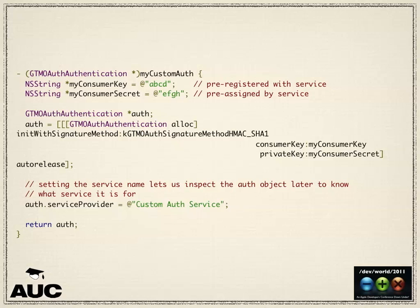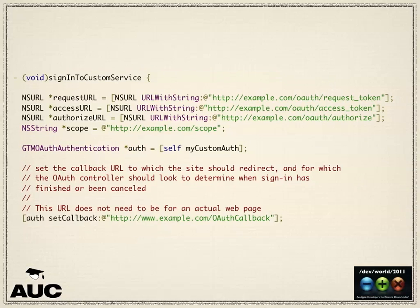The first thing you put in when integrating it into your application is a method that creates an authentication object for your app. It uses your consumer key and your secret to make something it uses later to populate the request. That gets called in the sign-in under custom service method.